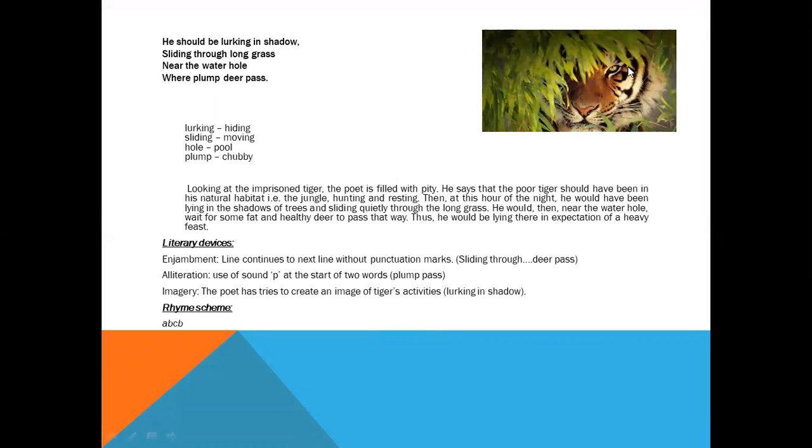Lurking means hiding, hiding in shadow. Sliding through long grass means moving, he's slowly moving through long grass near the water hole where the plump deer pass. Plump means very fat and chubby deer. Looking at the imprisoned tiger, the poet is filled with pity. He says that the poor tiger should have been in his natural habitat, that is the jungle, hunting and resting there. At this hour of night, he would have been lying in the shadows of trees and sliding quietly through the long grass. He would then near the water hole wait for some fat and healthy deer to pass that way. But here in the zoo, he is behind the bars.